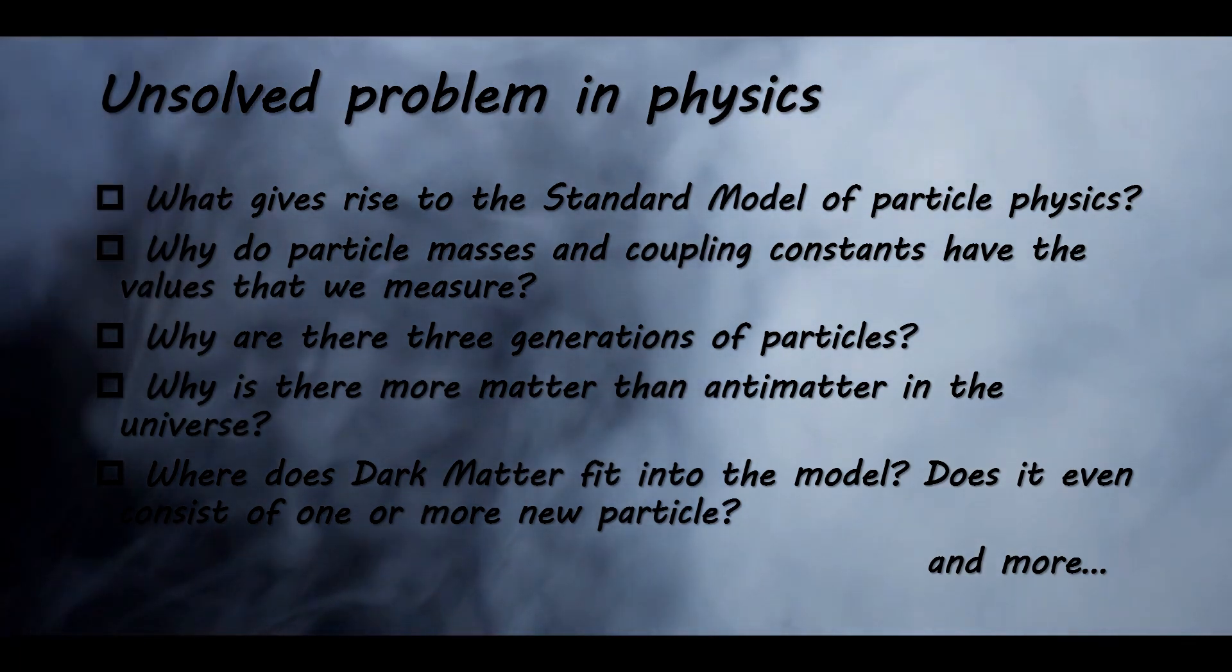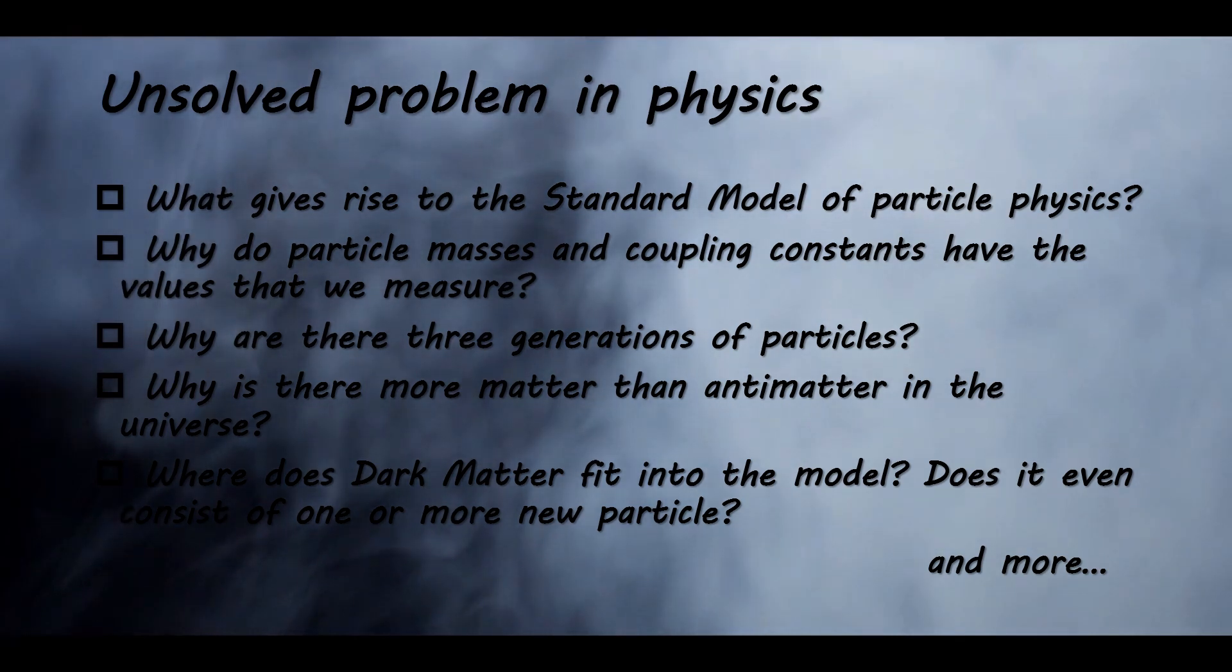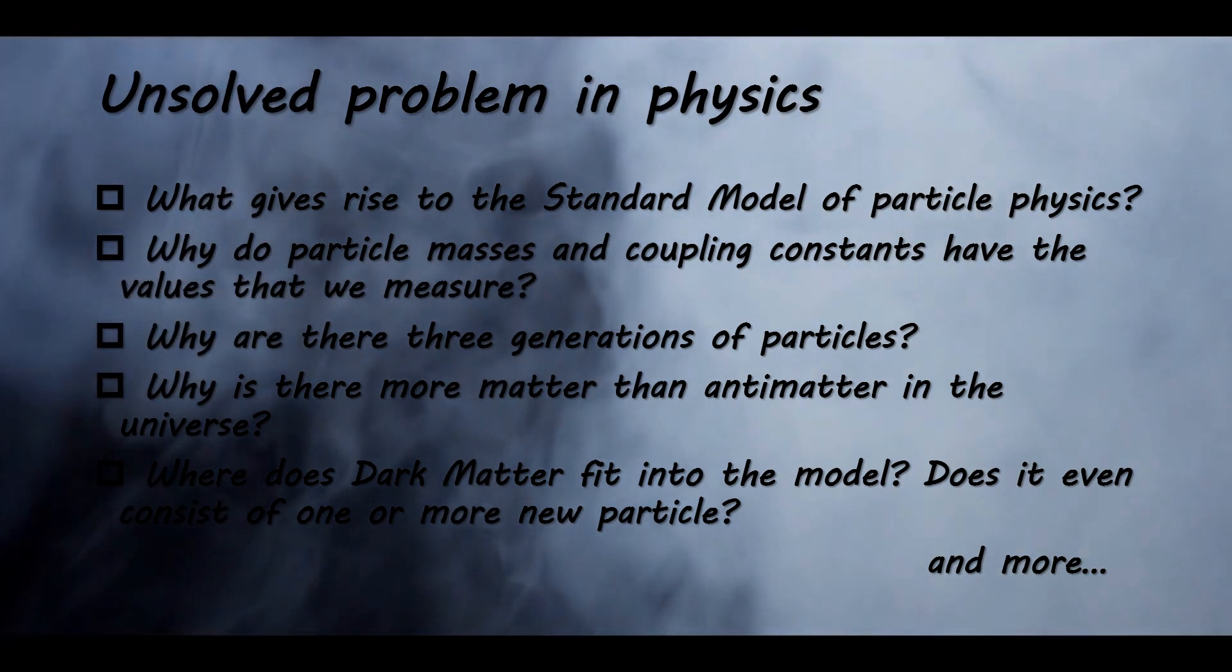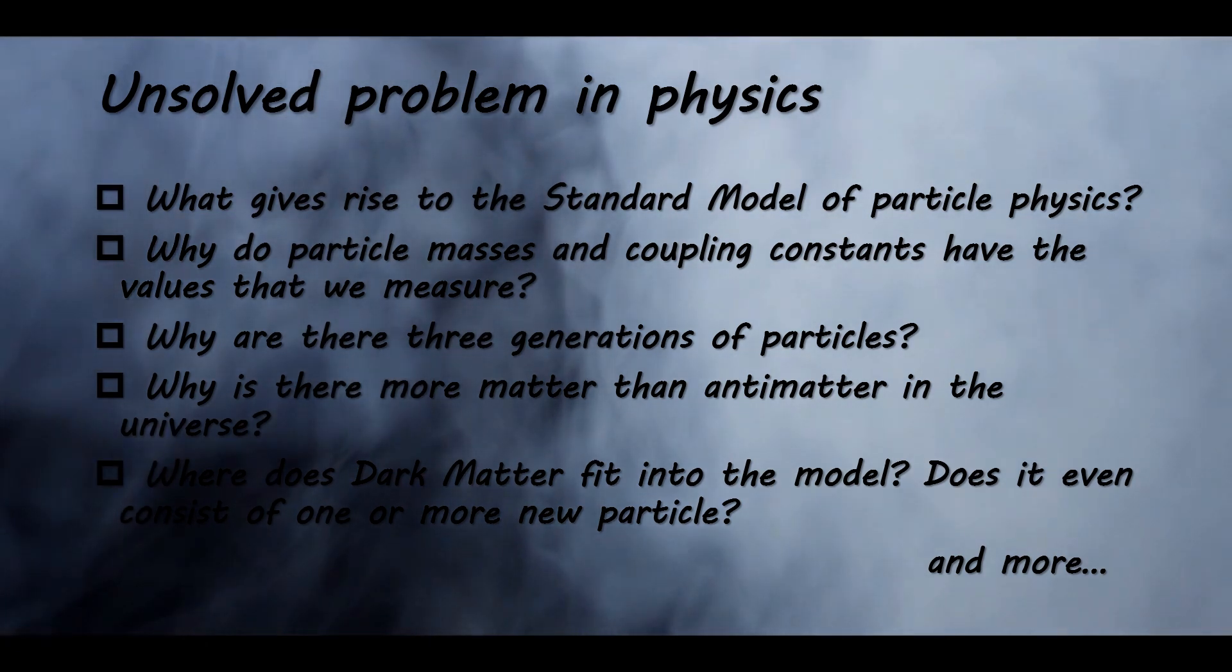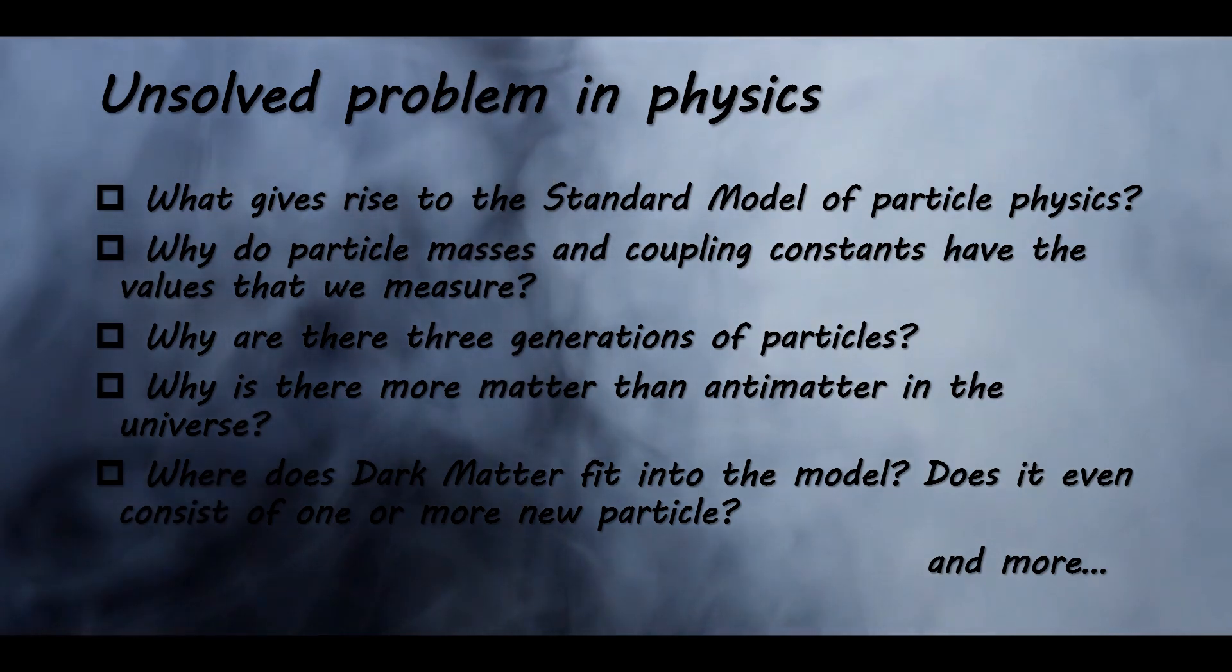However, it is a puzzle why the Higgs boson should be light, as interactions between it and Standard Model particles would tend to make it very heavy. The extra particles predicted by supersymmetry would cancel out the contributions to the Higgs mass from their Standard Model partners, making a light Higgs boson possible.